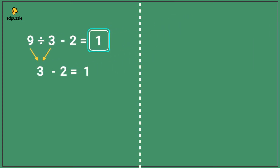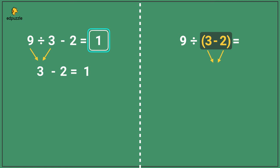Let's see what happens if we solve this same problem and put parentheses around 3 minus 2. Which part do we need to solve first? We have to solve what is in parentheses first. So what is 3 minus 2? 3 minus 2 is 1. Now we bring down the remaining term — 9 and the division symbol. Lastly, we solve 9 divided by 1. 9 divided by 1 is 9, so the value of this expression is 9.